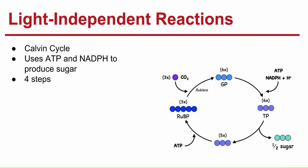Next, the light-independent reactions, also known as the Calvin cycle. The simplest form of this is that it uses ATP and NADPH to produce sugar. It's named after Melvin Calvin, an American scientist who discovered it. It's four steps.